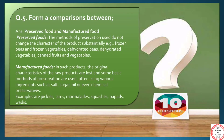Question number 5 talks about the comparison between preserved and manufactured food. In the case of preserved foods, the method of preservation does not change the basic characteristics of the food item. Examples are frozen peas, frozen vegetables, or dehydrated peas or dehydrated vegetables. Whereas in manufactured foods, the original characteristics of the raw product are lost and some basic methods of preservation are used, generally with ingredients like salt, sugar or oil.